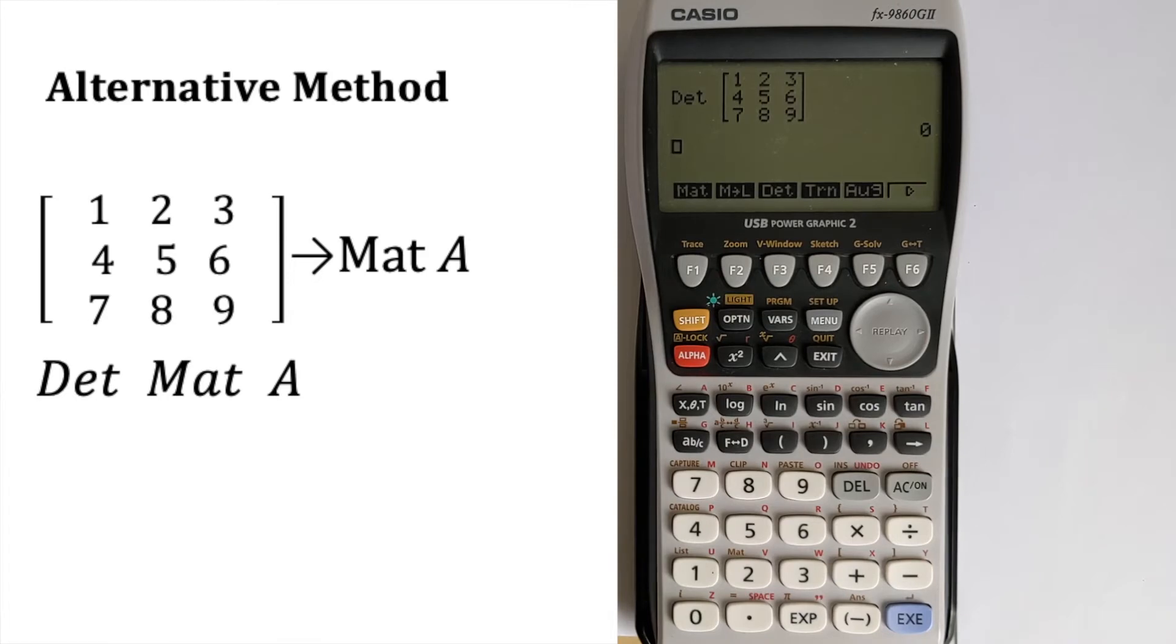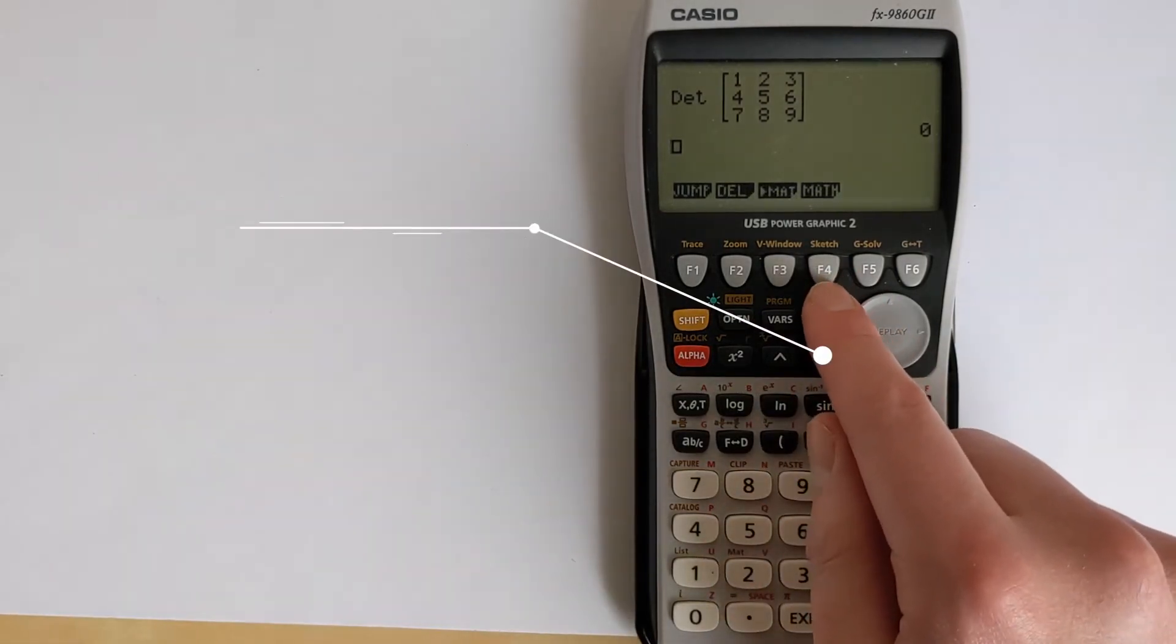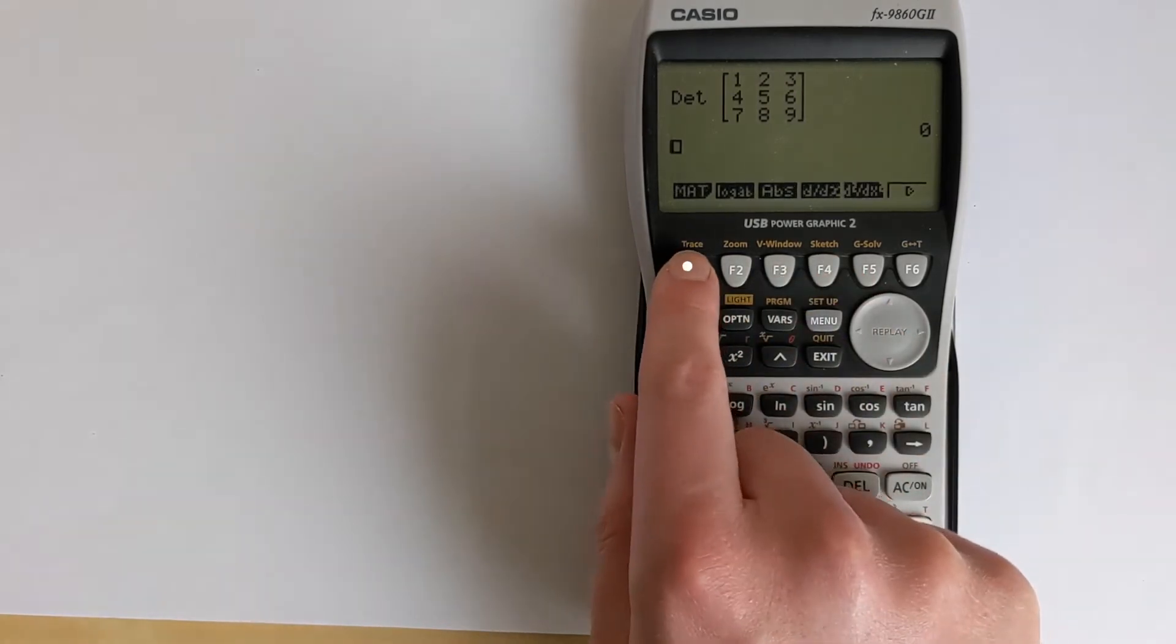There is an alternative method, which you can also use, that lets you store this matrix in a variable. And then you can find the determinant. So if we press exit and then go back through the steps to input a matrix. So we go to math and then matrix.